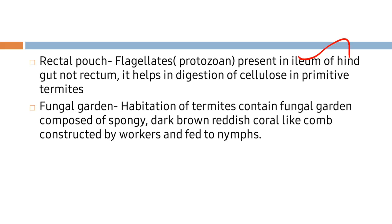Regarding the fungal garden, the habitation of termites contains a fungal garden that is developed by the termites themselves. It is composed of spongy, dark brown, reddish coral-like combs. This fungus is fed to the nymphs, and it also maintains the moisture and humidity of the termite nests.